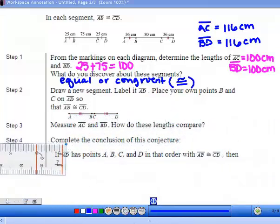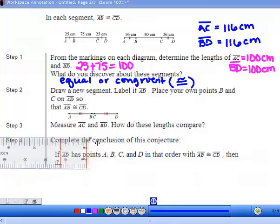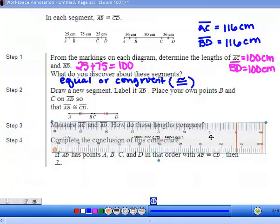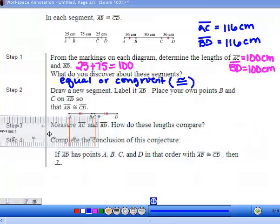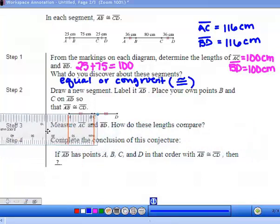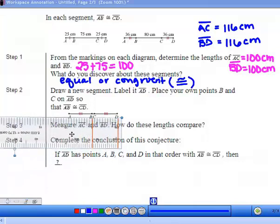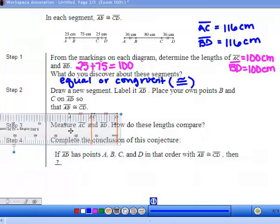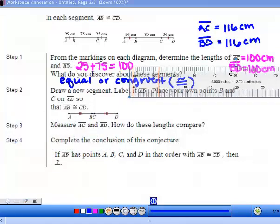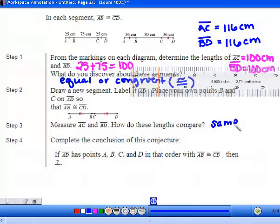That was five inches. Now we also want to look at BD, so I'm going to line the edge up with BD and look, it's also five inches. They are the same, they're congruent.